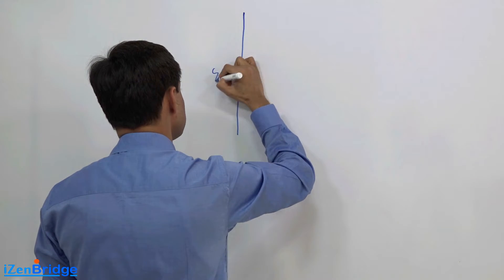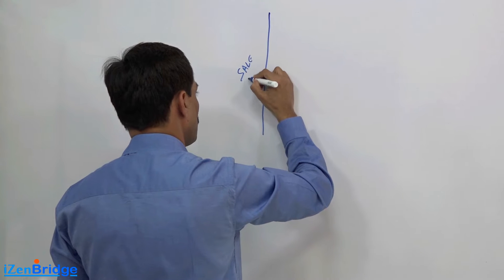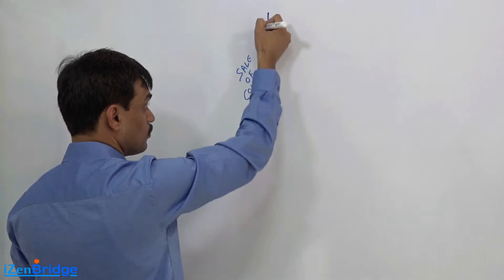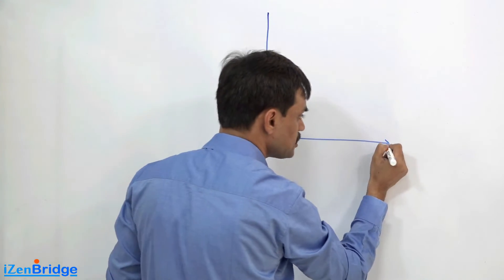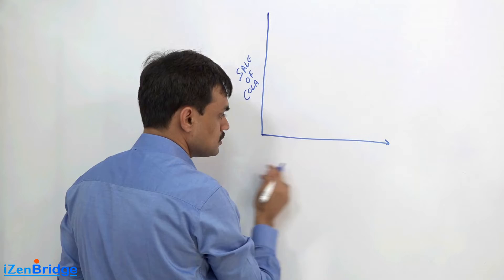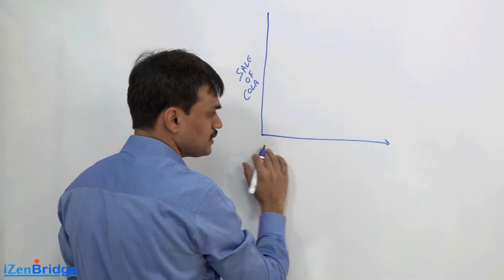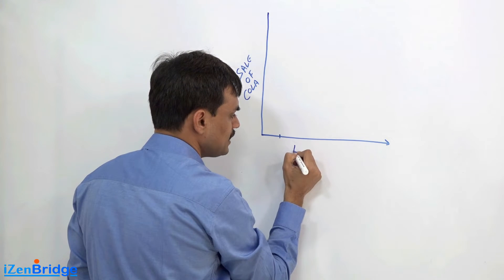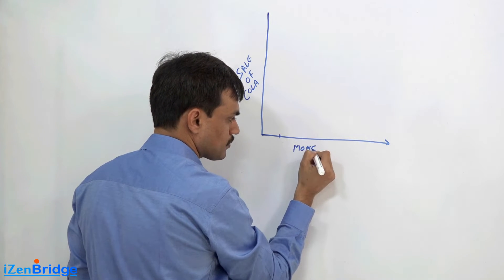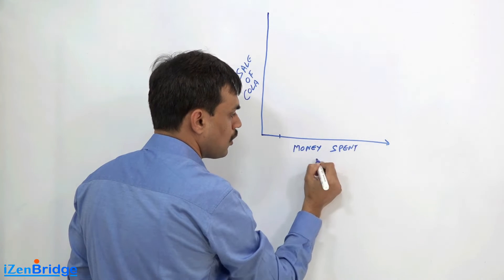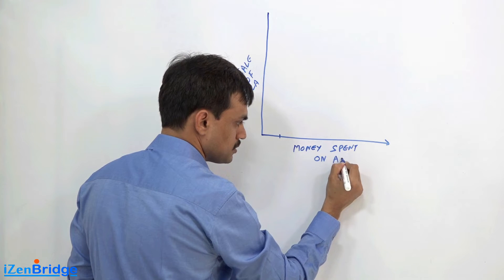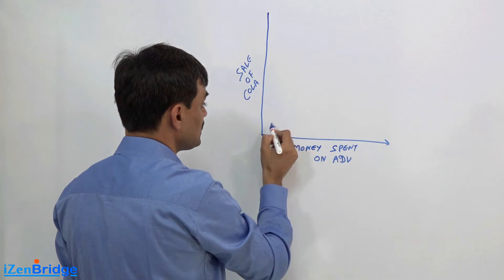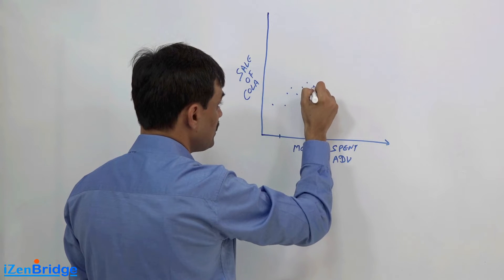This particular axis may be showing the sale of your cola, so the more top it goes, it increases. And this direction may show another variable. So this is the variable you want to observe, and this variable is an independent variable, which is more like money spent on advertisement.